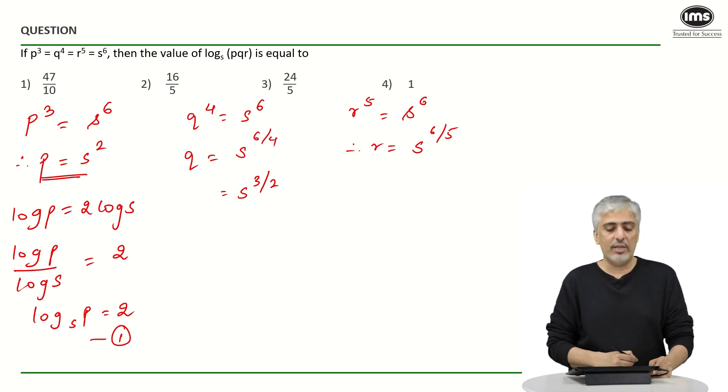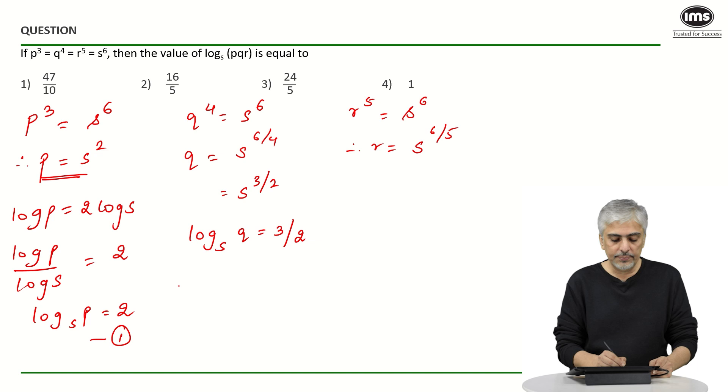You should be able to figure out that log q to the base s will come out to be 3 by 2, while log r to the base s will come out to be 6 by 5. And now, if I just go ahead and add, put it in the question, I want log pqr.